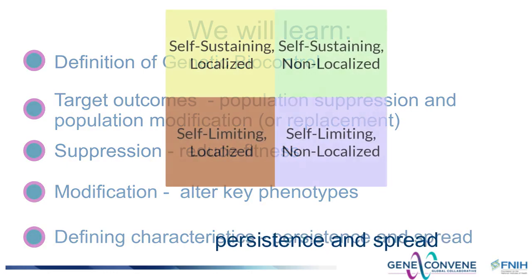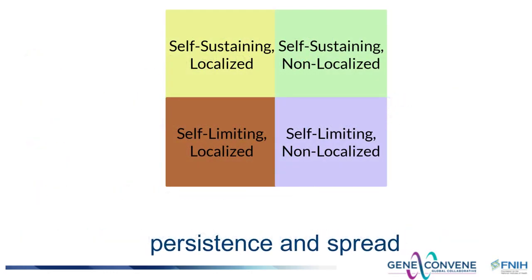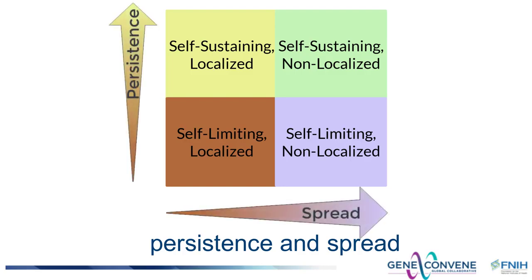Terms such as self-limiting, self-sustaining, and localizing and non-localizing are often used. This is a heuristic system for thinking about genetic biocontrol technologies, but it's worth appreciating that genetic biocontrol technologies actually fall somewhere on a continuum of persistence and localization potential.